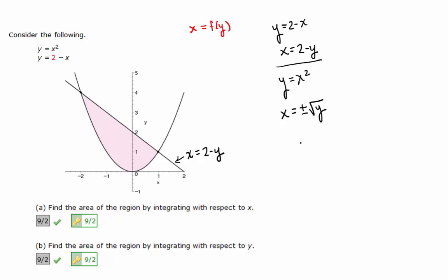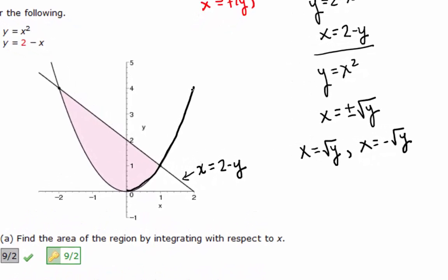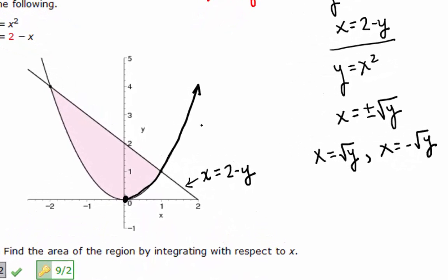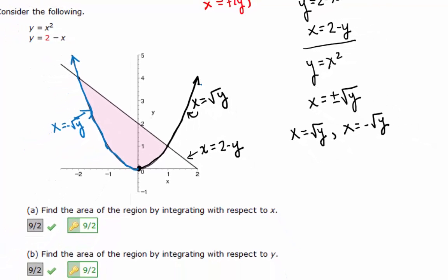That's not a function because you have two values for one input. We're going to separate it into two separate functions of y: x equals the positive square root of y, and x equals the negative square root of y. In other words, the positive x values — this portion of the graph to the right of zero — can be thought of as x equals the positive square root of y. And on the left, all of these have negative x values, so we think of that half as x equals the negative square root of y. When we set up an integral with respect to y, we're going to have to use these three curves.